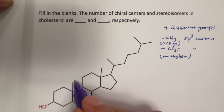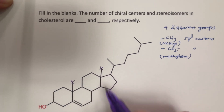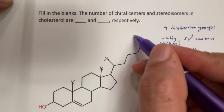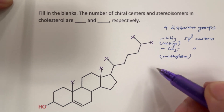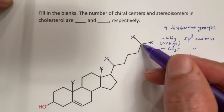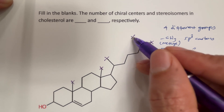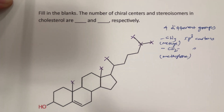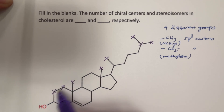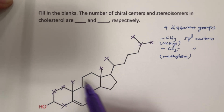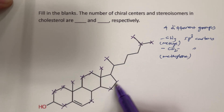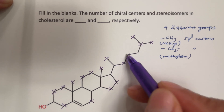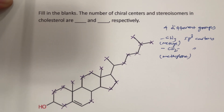So let us eliminate those first. We have a CH3 here — eliminate that CH3, and then CH3 here, CH3 here. This carbon also we can eliminate because it is connected to two methyl groups. Let us eliminate the CH2 carbons as well — these two are CH2's. So wherever we find CH2 carbons, we have eliminated those.